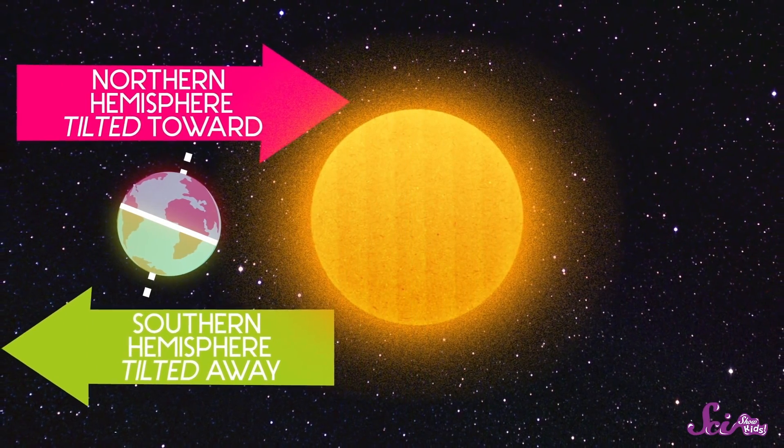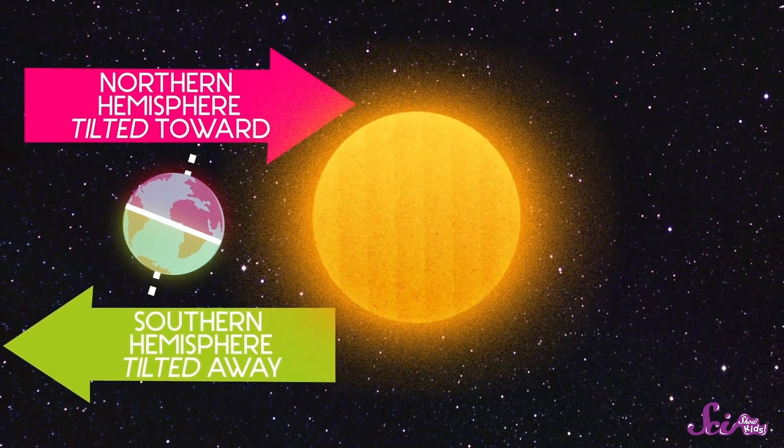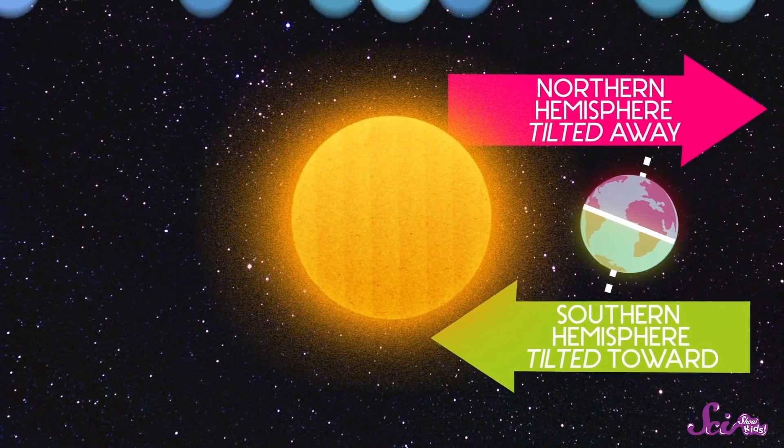Sometimes during the year, part of the Earth tilts toward the Sun, and sometimes it tilts away from the Sun. When the part of the planet you're on is tilted toward the Sun, it's summer. When it's tilted away from the Sun, it's winter. And when it's in between, the weather's pretty much in between too — that's when we have spring and autumn, which are both a little bit warm, a little bit cool, and often windy.